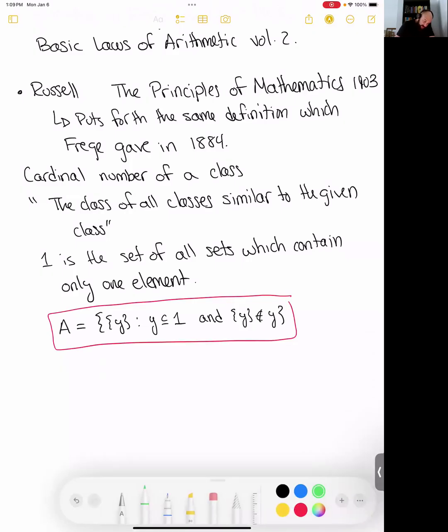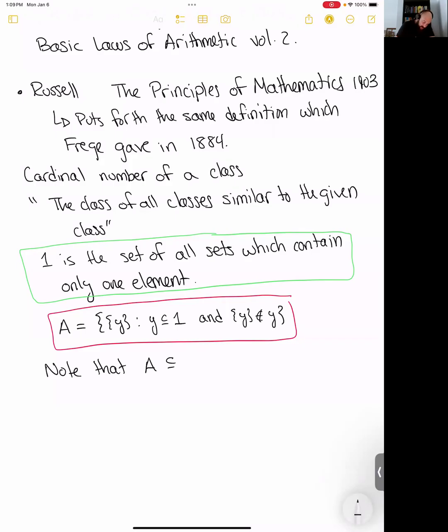This is going to be the problem set. Note that A by definition is a subset of one, because it's the set of all sets containing one element Y. So A already satisfies the first condition inside of its definition. Now you're going to be able to play with the second condition, because it's basically the regular Russell's paradox condition.